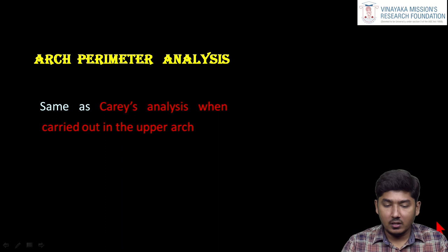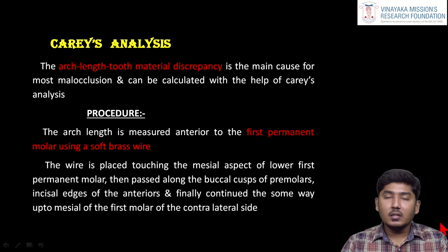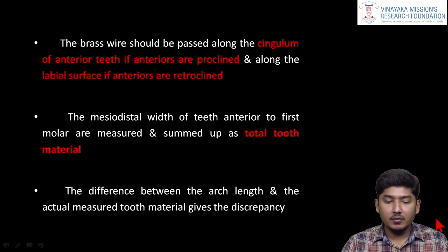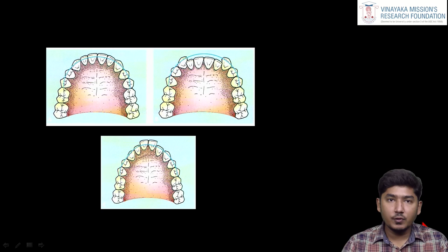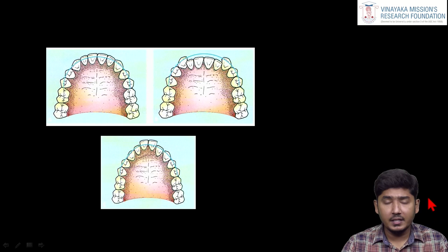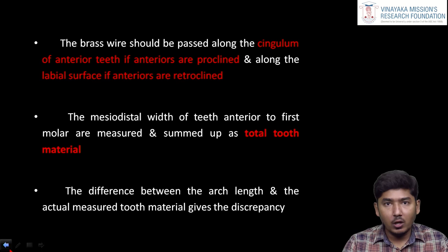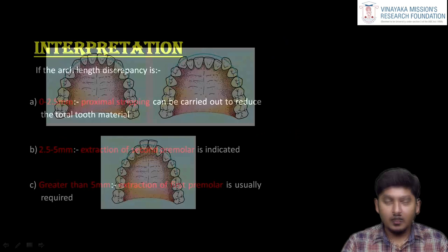Next is arch perimeter analysis, same as Carey's arch analysis when carried out in the upper arch. These analyses are done to evaluate tooth size and arch length discrepancy. Using a brass wire, the arch length is measured from the mesial aspect of the first molar to the mesial aspect of the first molar on the contralateral side. The brass wire should follow the buccal cusp tips and the incisor edges of the anteriors. In cases of proclination, it should pass along the cingulum of the anteriors; if retroclined, the wire should pass in front of the anteriors. Then, the mesiodistal width of all teeth from premolar to premolar, excluding the first molar, is measured.